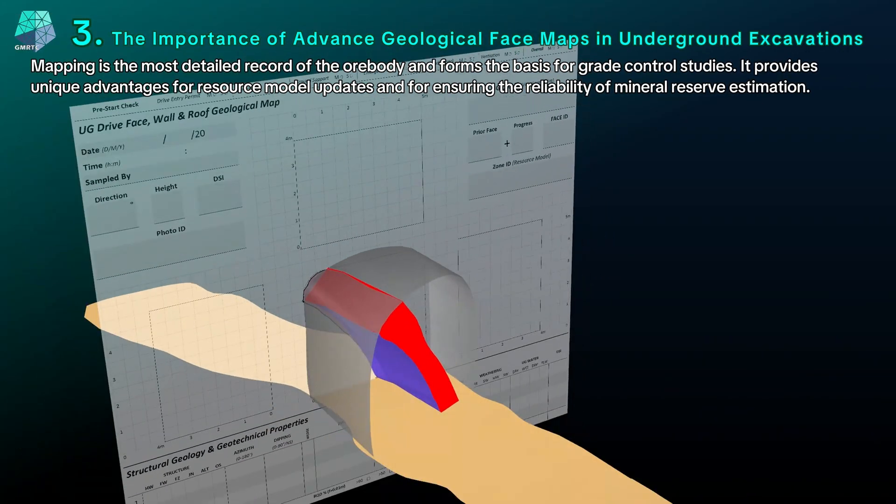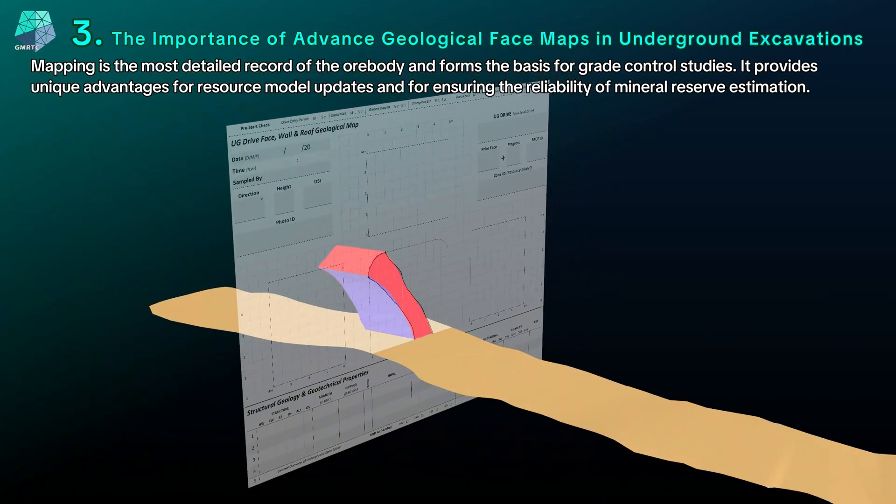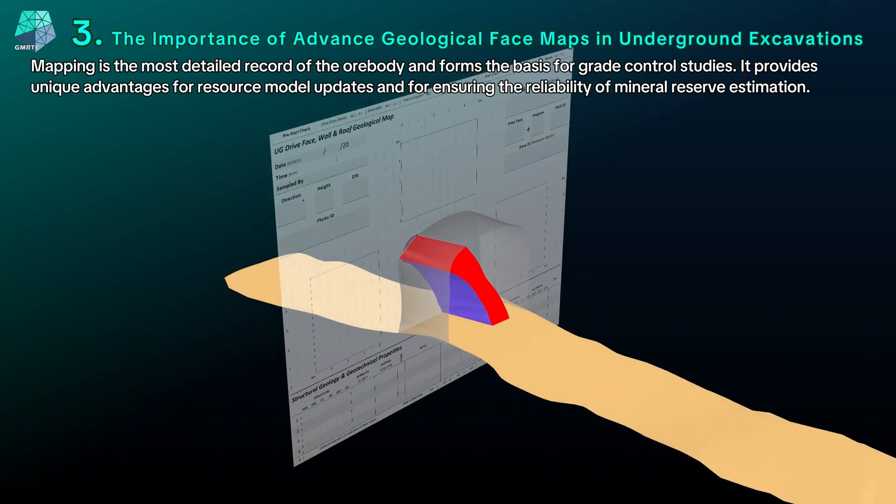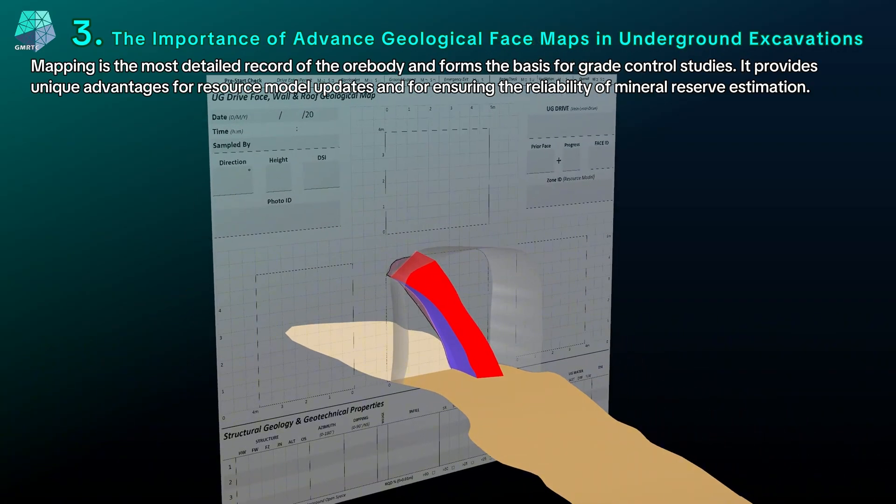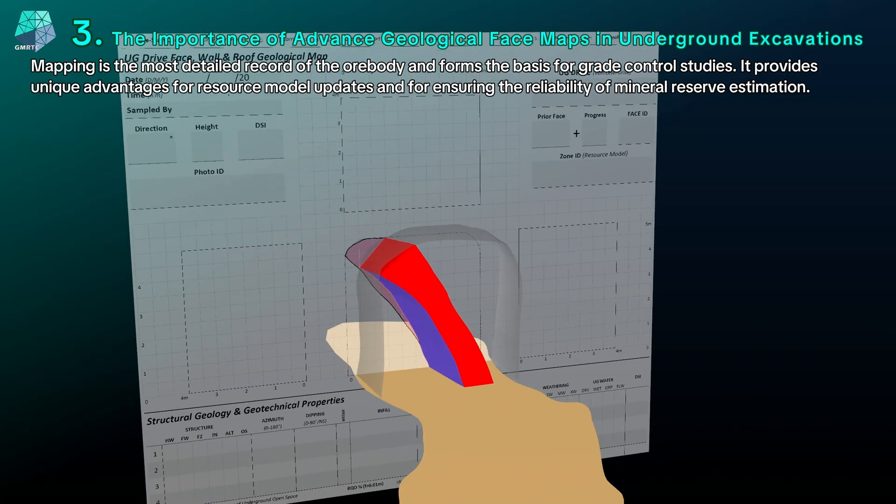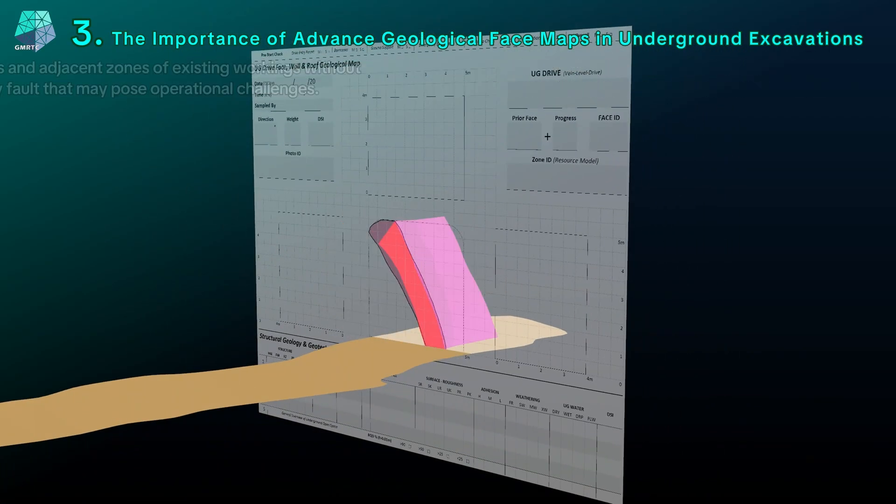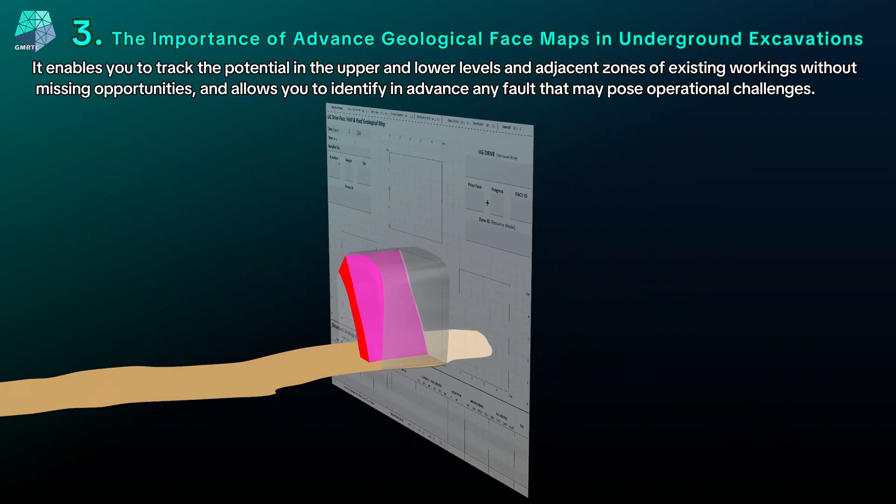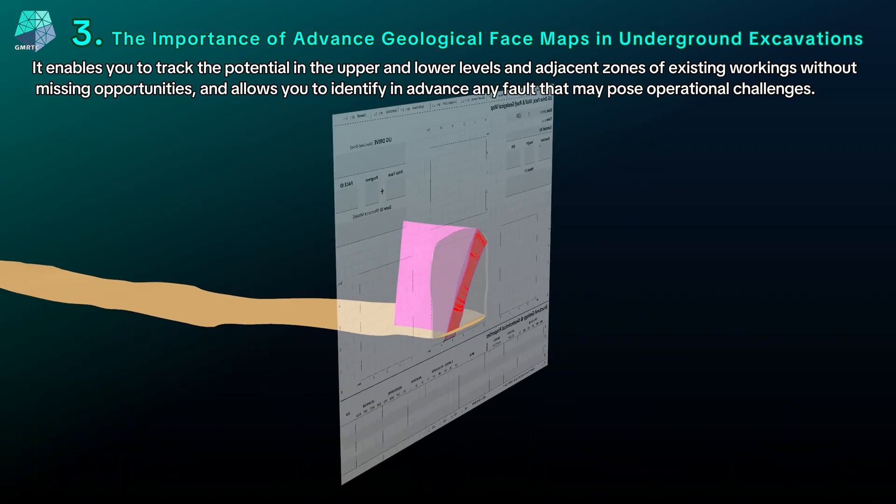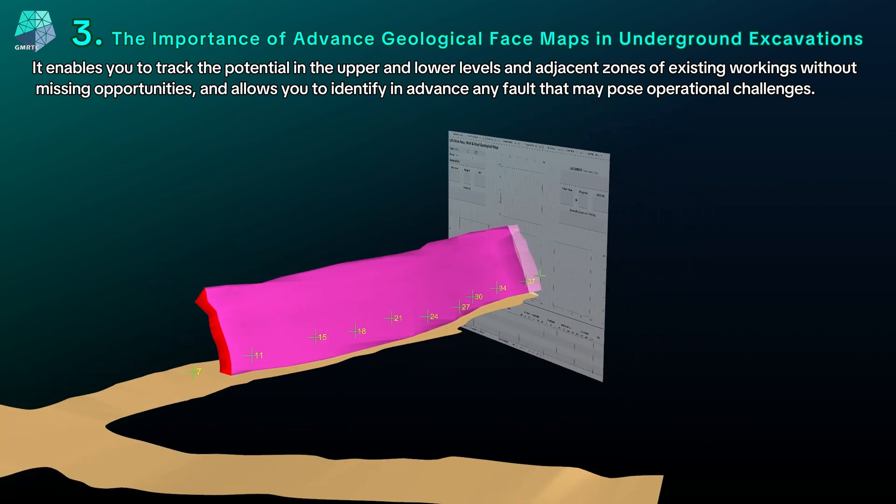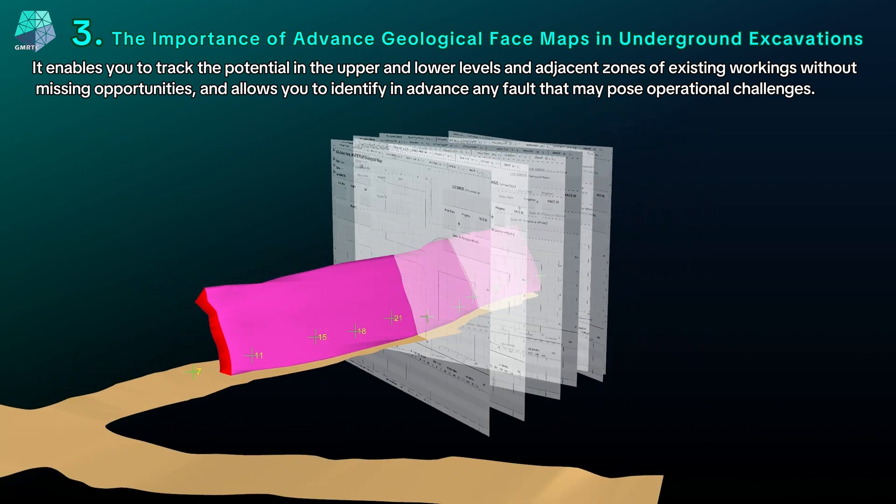Mapping the most detailed record of the ore body and forms the basis for grade control studies. It provides unique advantages for resource model updates and for ensuring the reliability of mineral reserve estimation. It enables you to track the potential in the upper and lower levels and adjacent zones of existing workings without missing opportunities, and allows you to identify in advance any fault that may pose operational challenges.